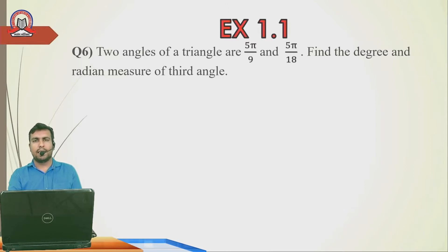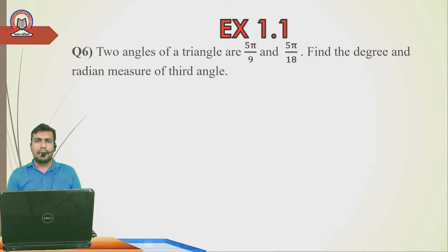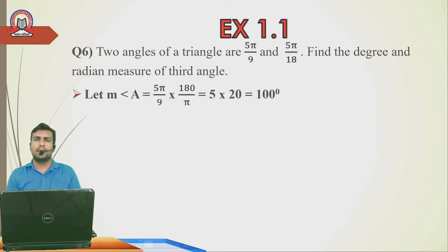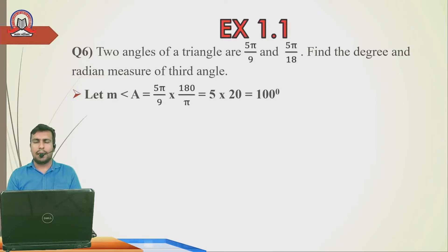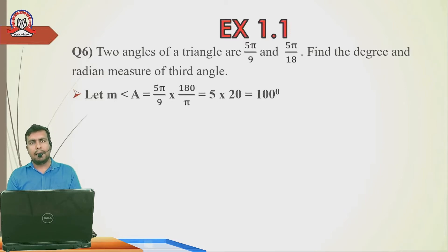We use the triangle property: Angle A + Angle B + Angle C = 180°. All three must be in degree mode. Angle A = 5π/9 radian — converting to degree: multiply by 180/π. The π cancels, leaving 5 × 180/9 = 5 × 20 = 100°. Similarly Angle B = 5π/18 radian; converting: 5π/18 × 180/π = 5 × 10 = 50°.